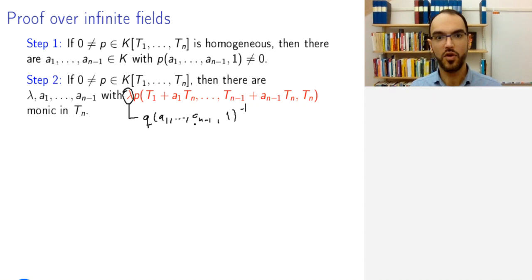But the point is that, given a polynomial, it's always possible, up to such a simple change of variables and multiplying by an overall scalar, to make the polynomial monic in one of the variables. And now we're ready to prove the theorem.